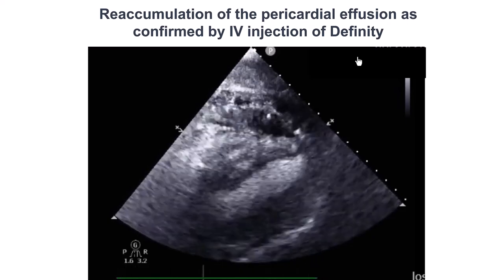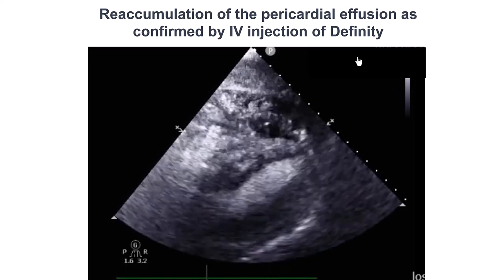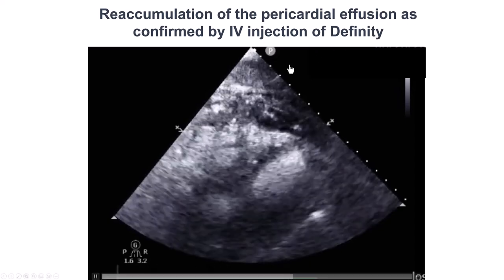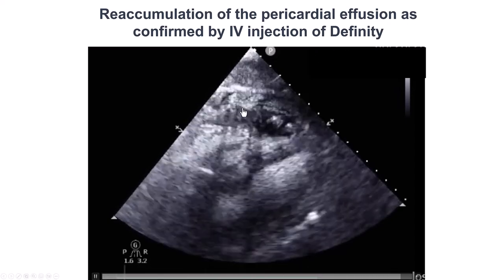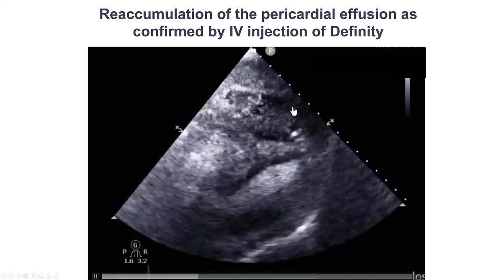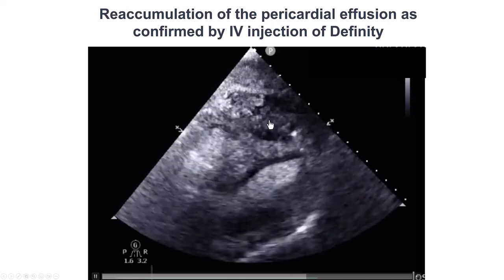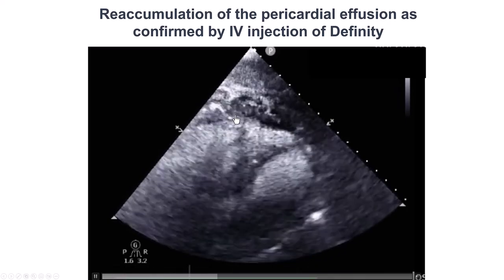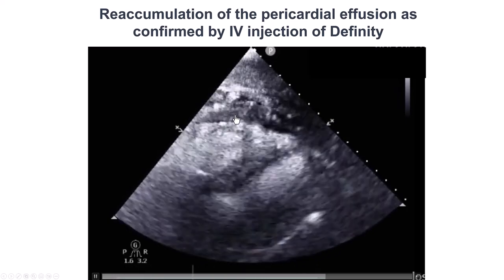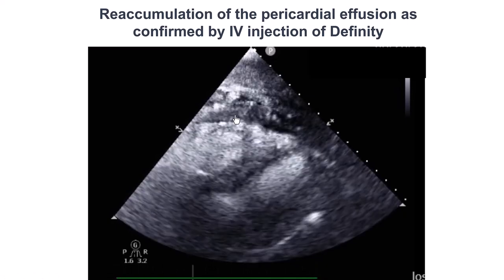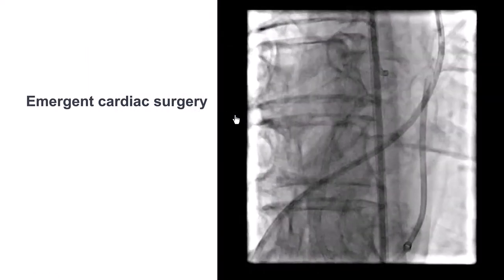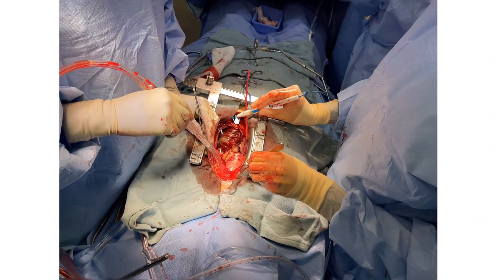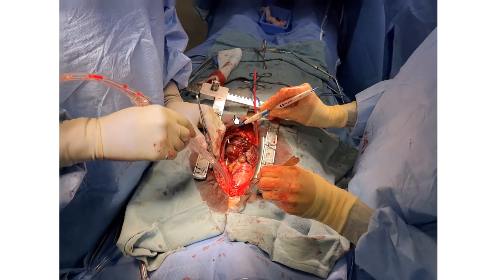Unfortunately, the patient was re-accumulating the pericardial effusion. We gave echo contrast material (Definity), and found that there were bubbles going into the pericardial space — confirming active bleeding into the pericardium. As mentioned, we could not re-engage the RCA because of the PK Papyrus protruding into the aorta. After multiple attempts to re-engage, we decided to send the patient to surgery.